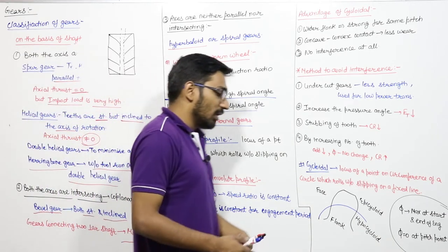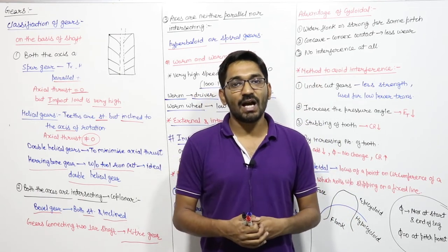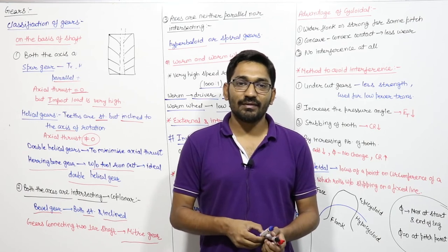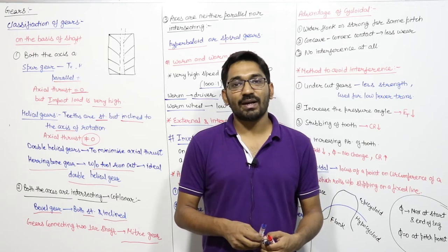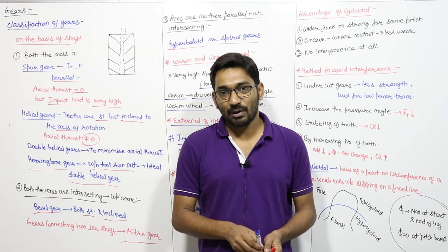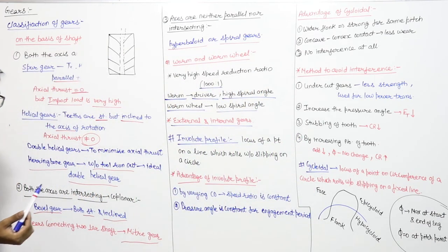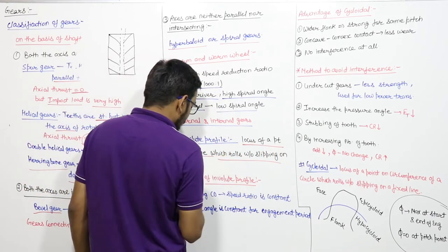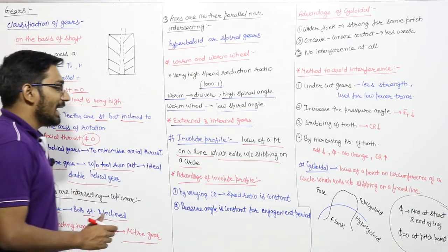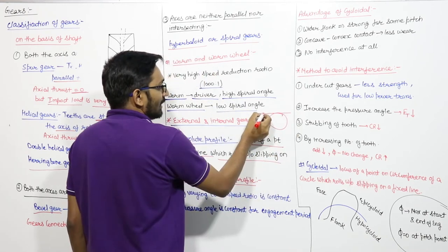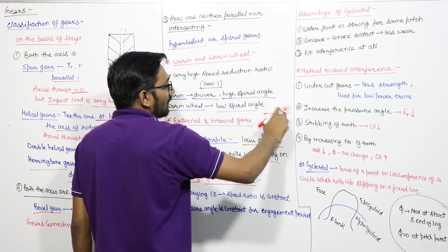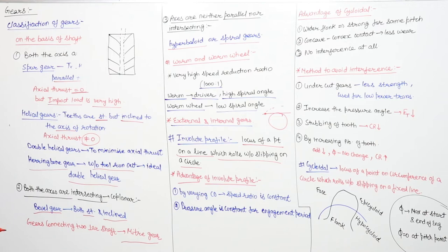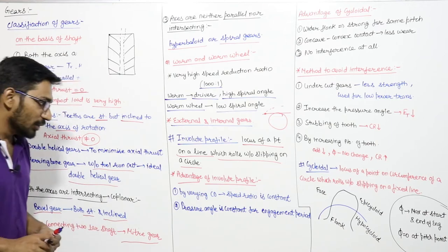The law of gearing states that mating gears must satisfy it, and the profile which satisfies this is called a conjugate profile. There are two conjugate profiles: involute and cycloidal. The involute profile is the locus of a point on a line that rolls without slipping on a circle.